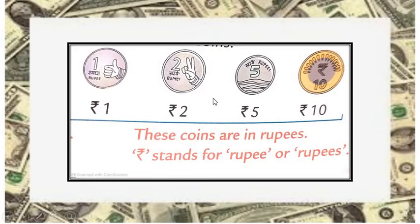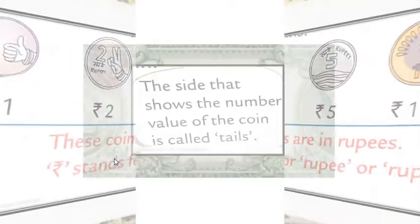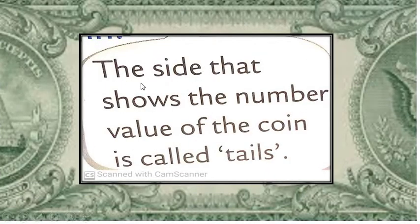Now see. These all images are coins of rupees. 1 rupee, 2 rupee, 5 rupee and 10 rupee. What is this? What is the meaning of this sign? Let us understand. R stands for rupee or rupees. The side that shows the number value of the coin is called tails. And the other side is called heads.